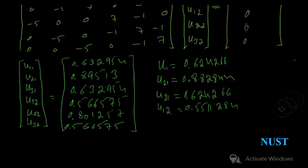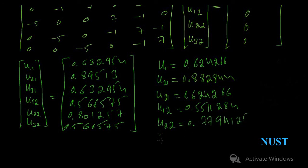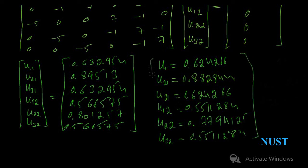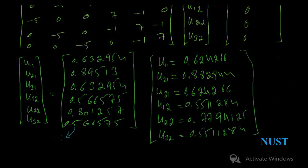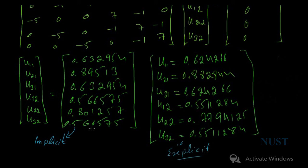By using MATLAB or Mathematica, you can see the comparison between the explicit and implicit methods. Implicit is more accurate than the explicit method, but requires more computational power. Computers mostly use the implicit method because it solves matrices rather than individual equations.